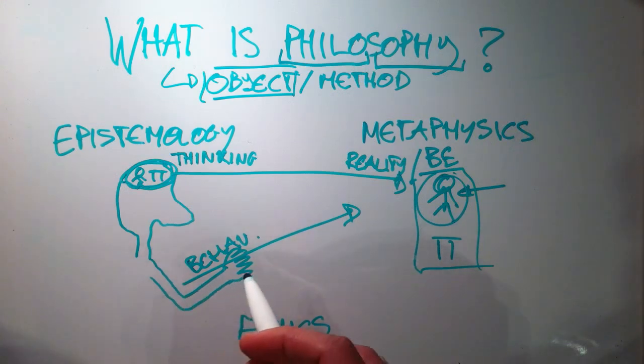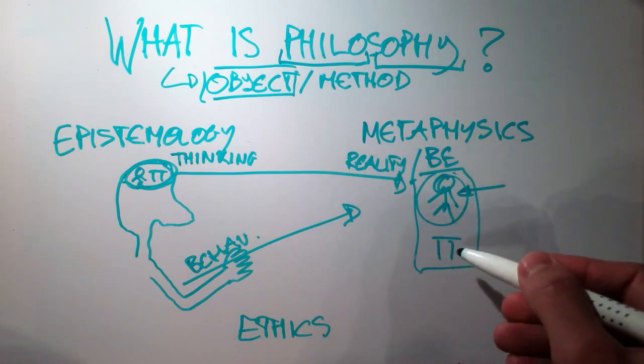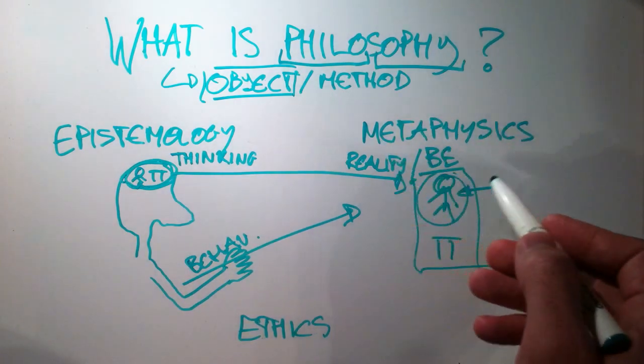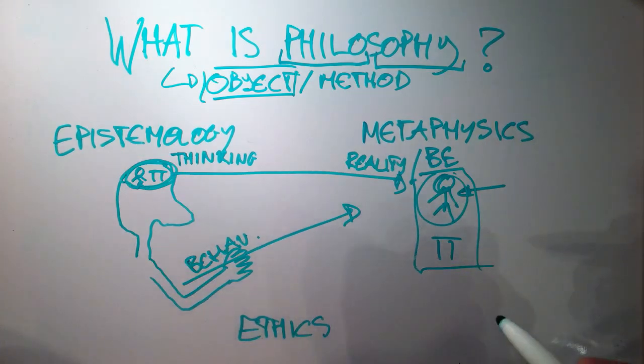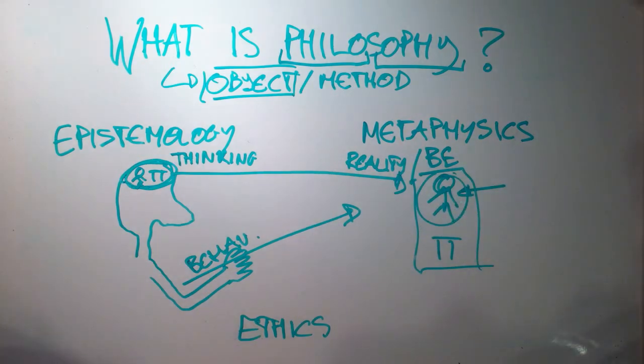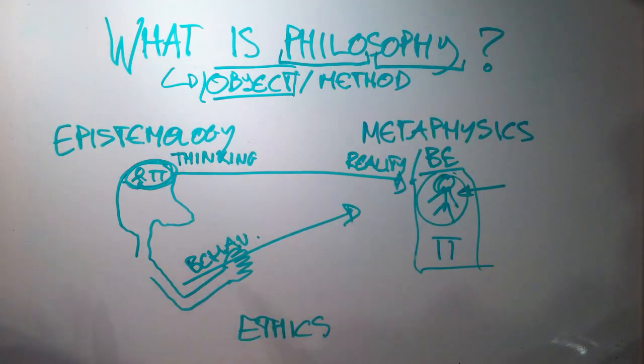And ethics asks the question: How should we behave towards other people, perhaps sometimes also towards other things? How should we behave? Alright, these are the three main branches of philosophy. And I've touched upon the topics, what they are about. Now I just leave it up to you as a kind of mental homework for this first lesson: To think about what is the common thread here. Why are these three branches sub-disciplines of philosophy? What's the unity in the object?